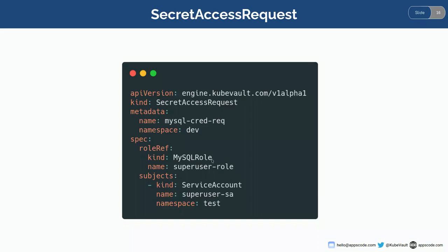A secret access request can be created under various roles — in our case, we're using the MySQL role. We've provided the name and the subjects, which will have the necessary permission to read the secrets generated on approval. A secret access request has three different phases: it waits for approval, it can be approved, or it can be denied if the DB admin sees any anomaly. On approval, the QVault operator will issue credentials and create a Kubernetes secret containing those credentials.